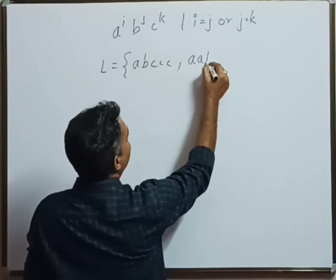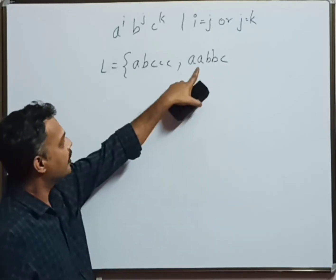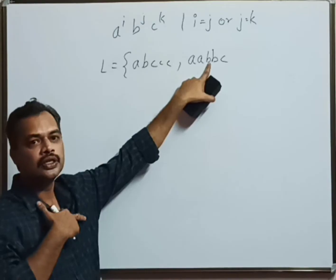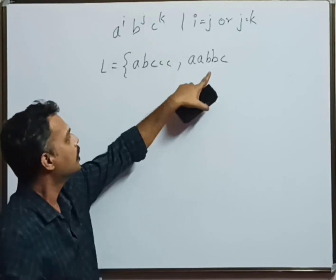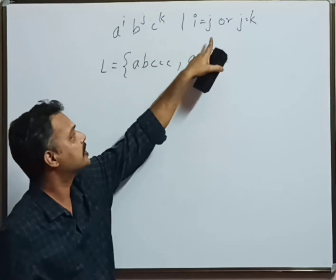It can also be aabbbc. Number of a's is two, number of b's is two, and c is one, because we are not bothered about the number of occurrences of c in the first case.